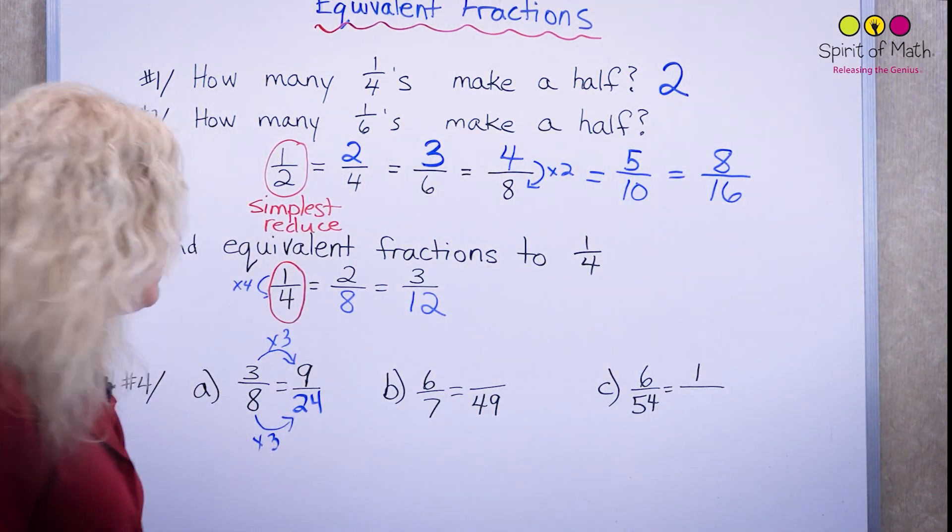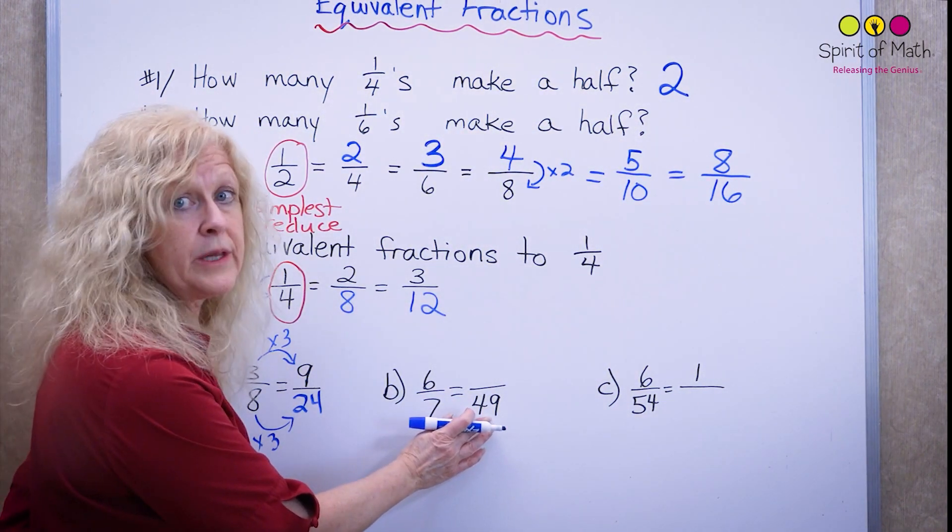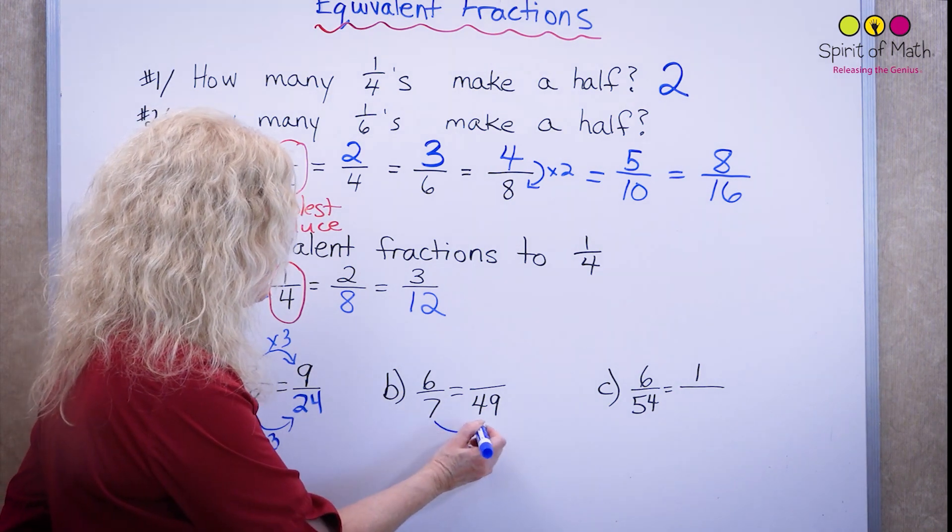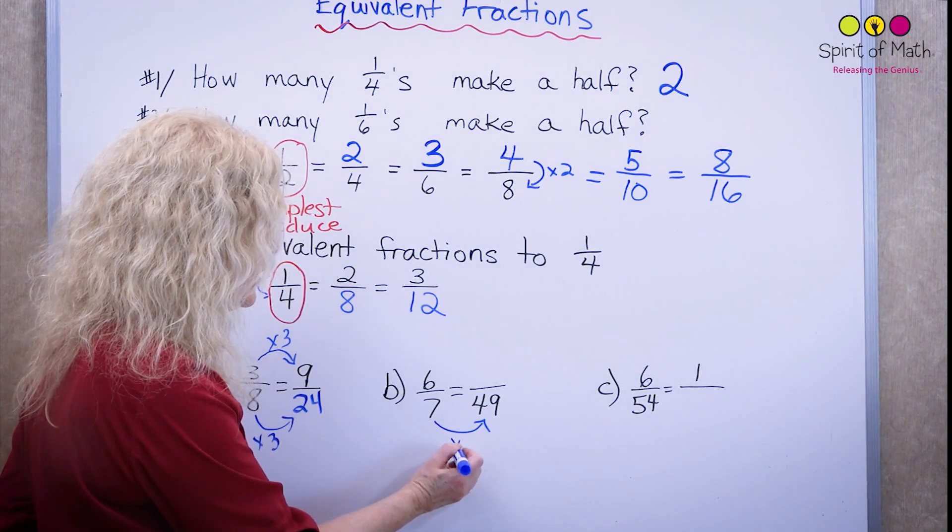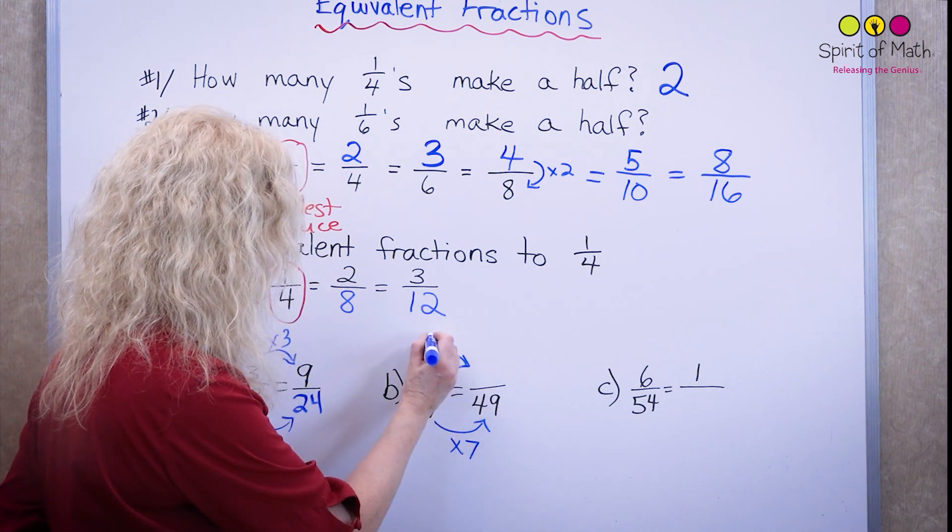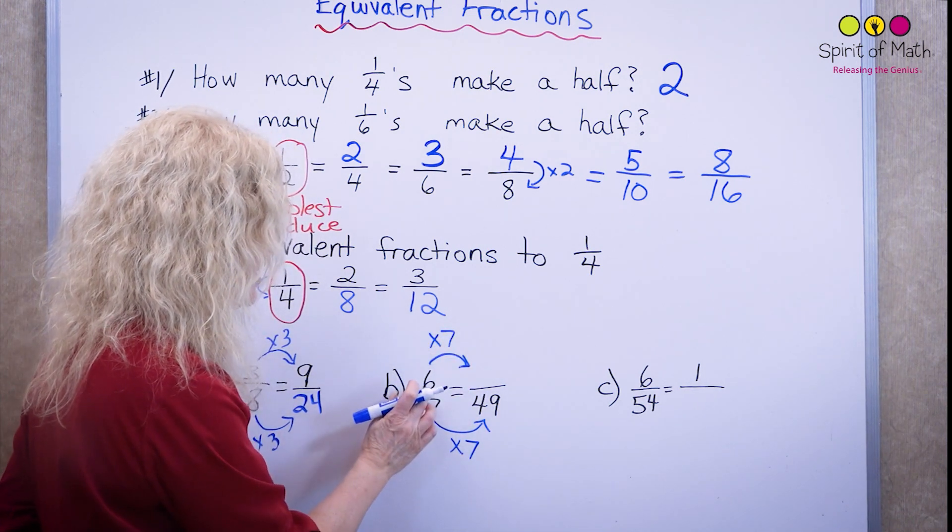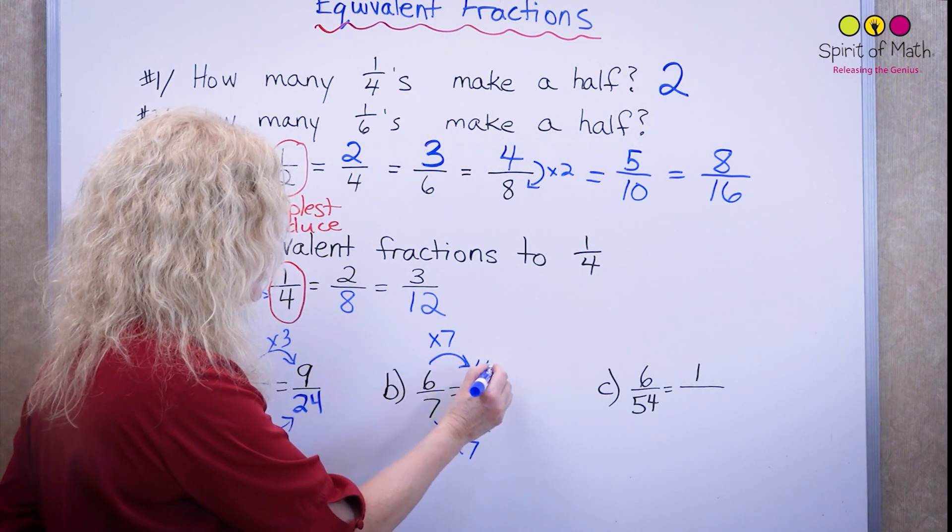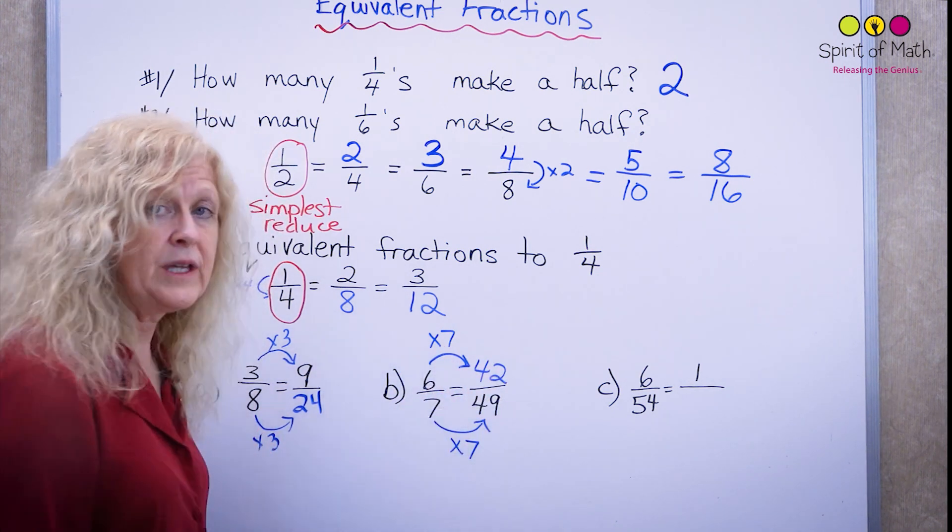So let's do the next one. Oh, we're given the bottom number this time. So seven times what will equal forty-nine? Seven times seven. So you have to do the same to the top. Six times seven, which is forty-two. And these are equivalent now.